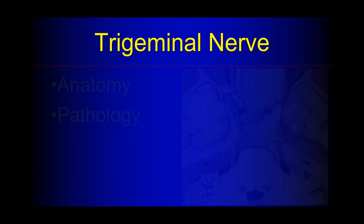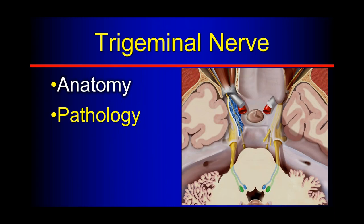We're going to start off looking at the anatomy, just like all the other cranial nerves. We think about almost all of them having central cranial nuclei, an intraaxial segment, a cisternal segment, and then they go through foramina of the skull base. Every time we think about an isolated cranial nerve deficit, we want to think about imaging from the origin nucleus all the way out through the end organ.